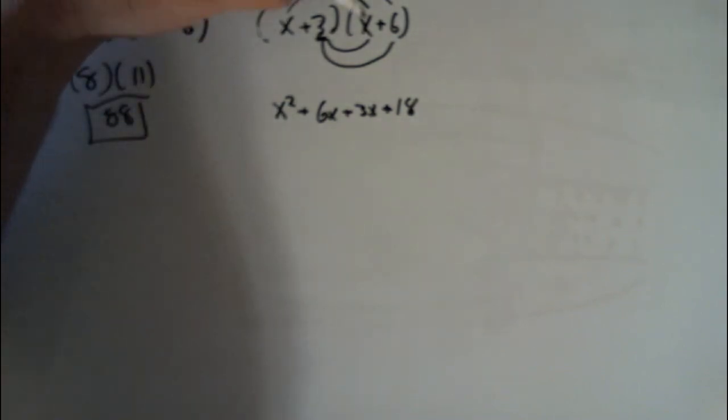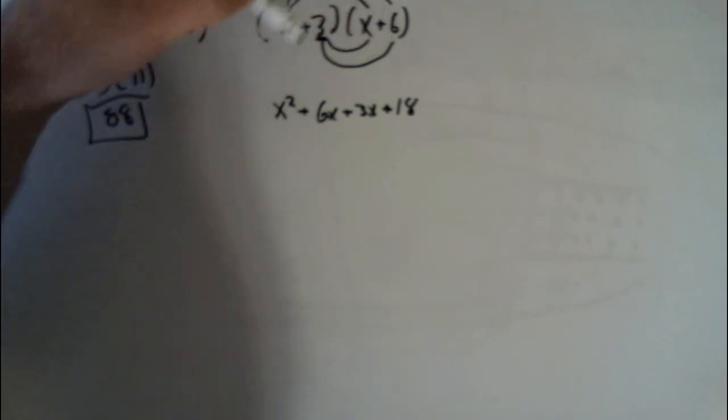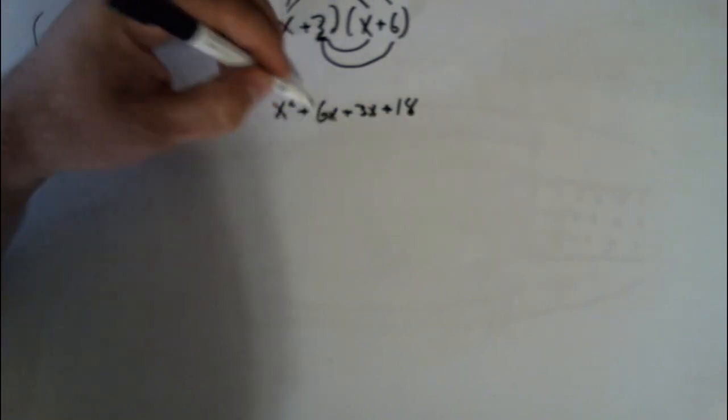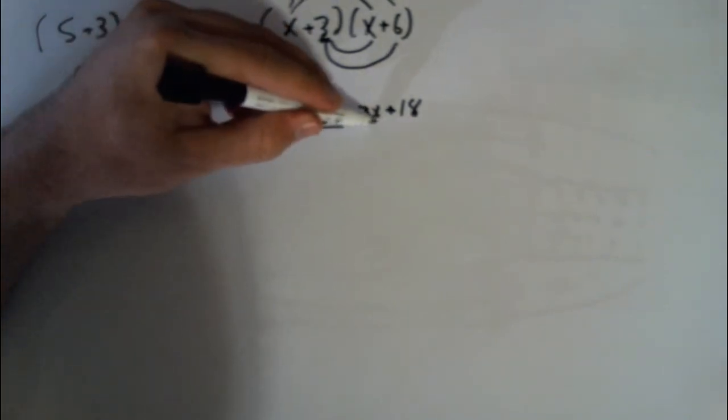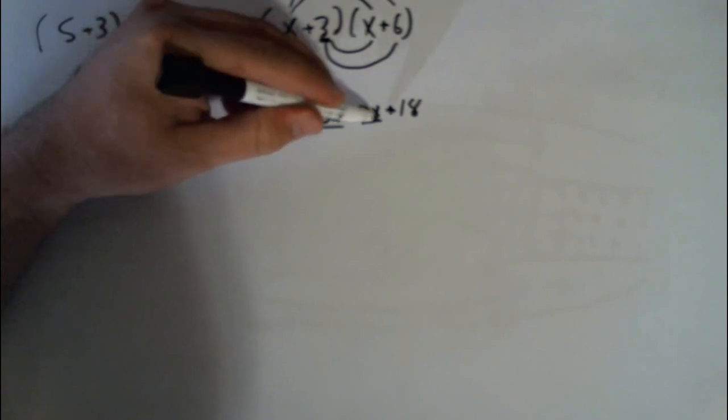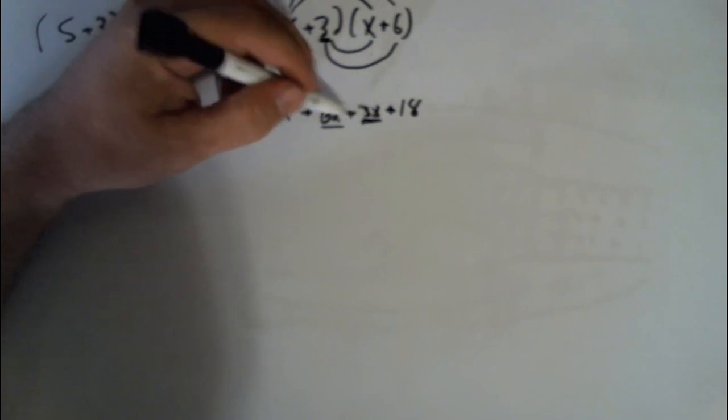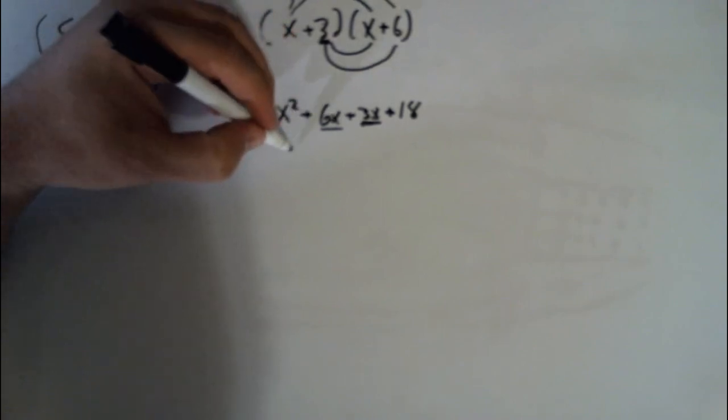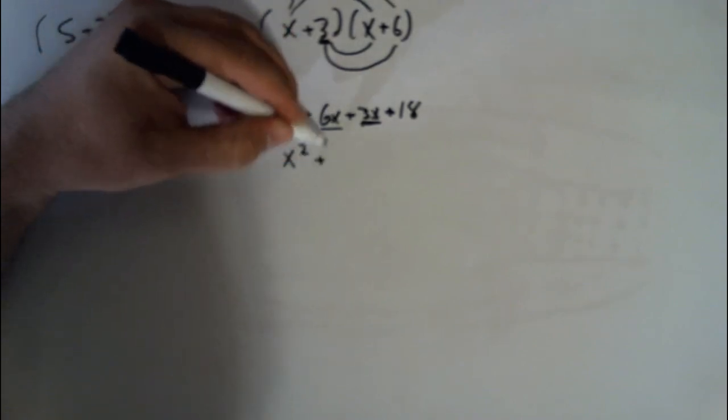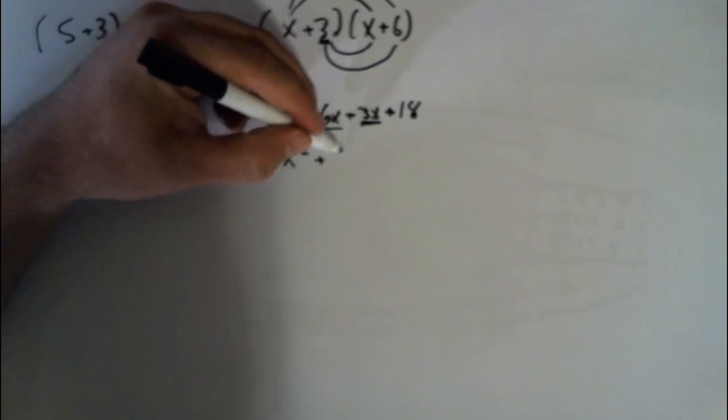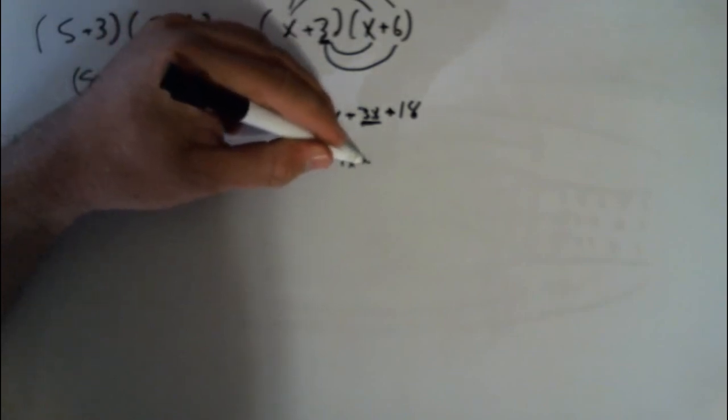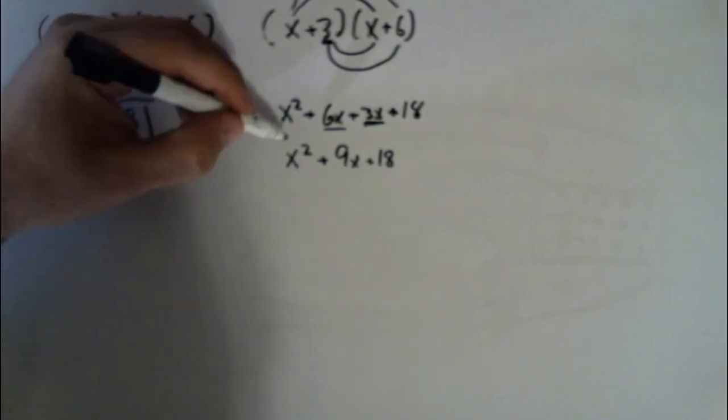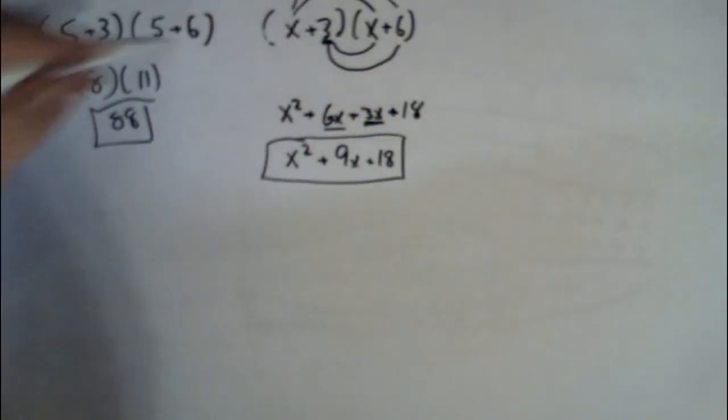Does that make sense? x times x plus x times 6 plus x times 3 plus 3 times 6, 18. Now, I notice that I have an x here and an x here. You can combine terms when that happens, as you know in algebra class. So x squared plus, and then I can just add the 6 and the 3x to make 9x plus 18. And that is a quadratic that we have made by foiling two terms together.